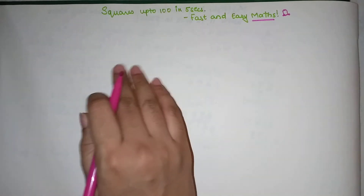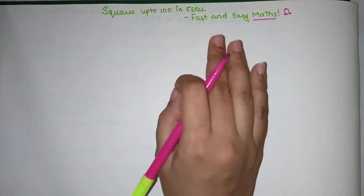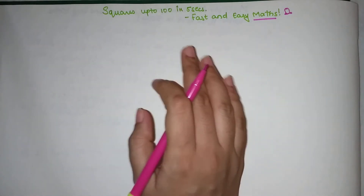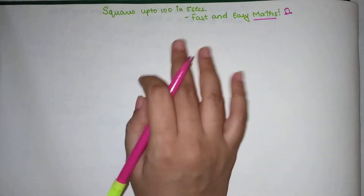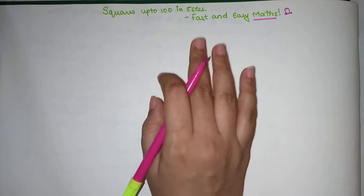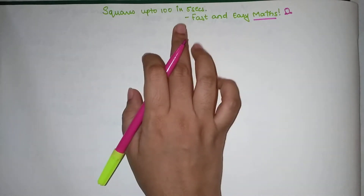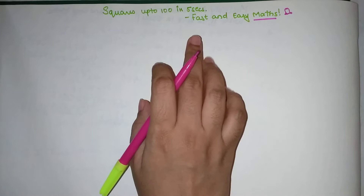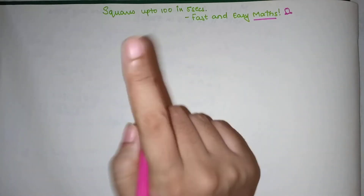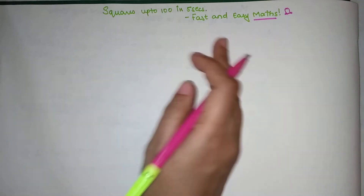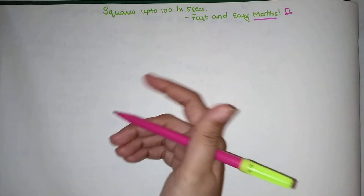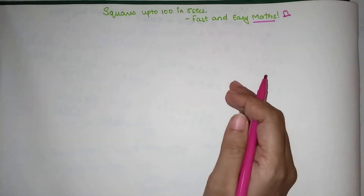Students, today I'm going to show you a trick with which you will be able to find the square of any number up to 100 in a matter of 5 seconds. Yes, you read it right — I'm going to show you a trick with which you will absolutely be able to find squares within 5 seconds. Isn't that brilliant?